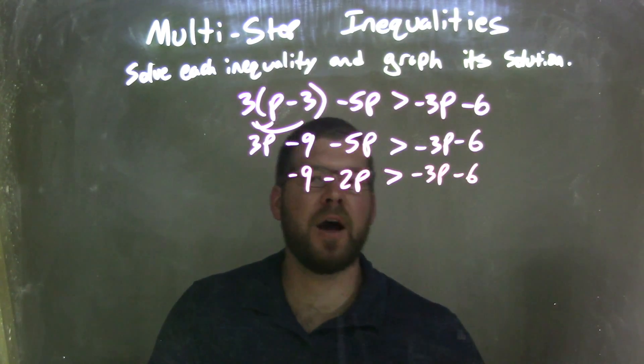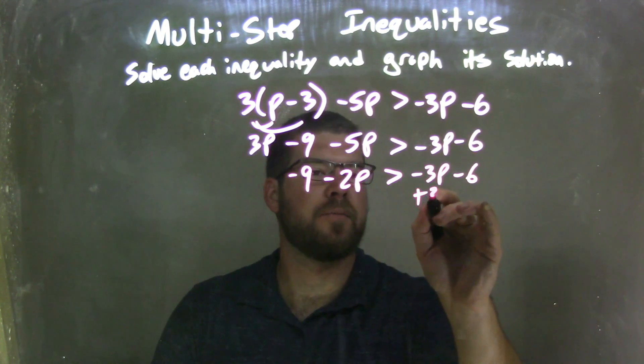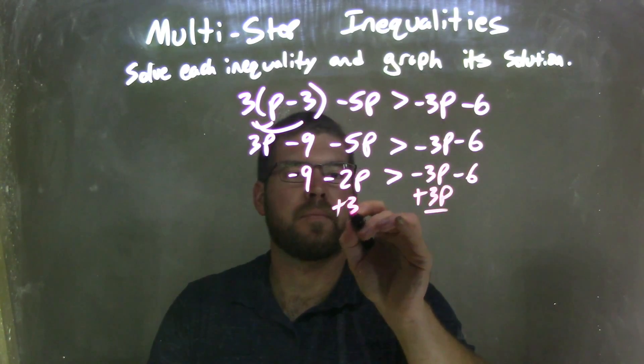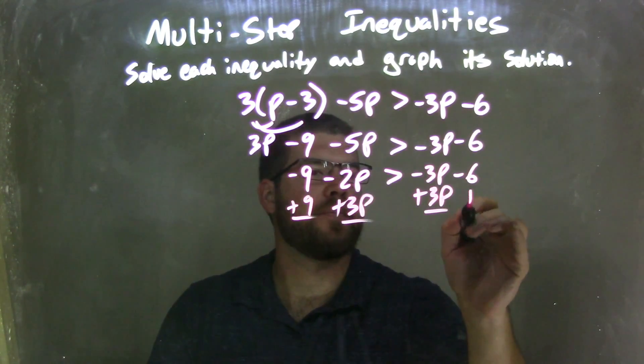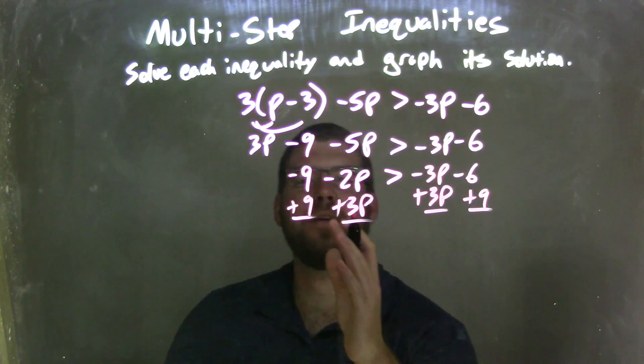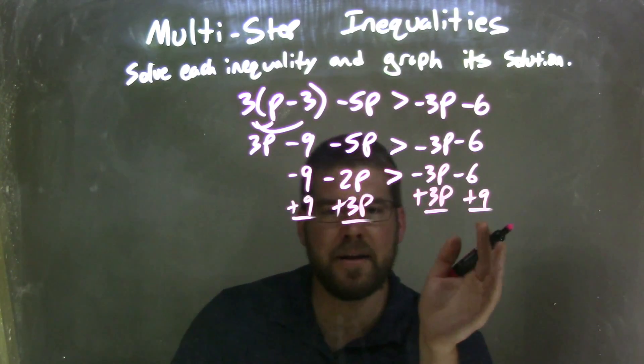So let's bring our like terms together. I'm going to add 3p to both sides, and I'm going to add 9 to both sides. So my p is to the left, my number is to the right.